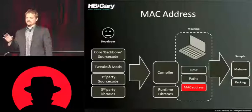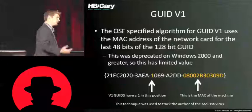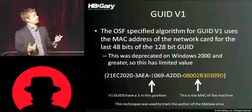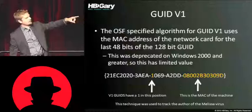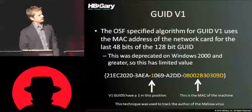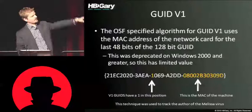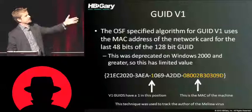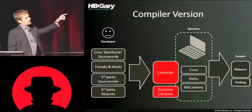This is interesting: MAC address. Don't get excited — it turns out you're not going to be able to do this as easily as you used to be able to. But everybody remembers the Melissa virus. Here's how they actually caught the guy. GUIDs are actually generated on a system, and in v1 GUIDs you'll notice there's a '1' in the position indicated on the slide — those digits at the end are the MAC address of the machine that generated it. That's how they caught the guy that released the Melissa virus. But version four is where we're at now, and you'd see a '4' in that position, which is actually a random number — so you can't use that technique.